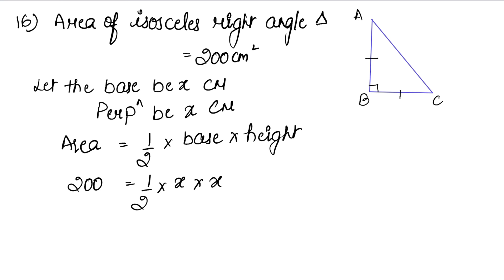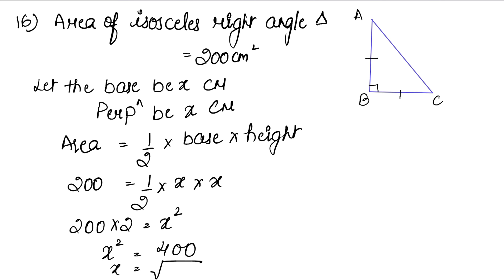So: ½ × x × x = 200, which gives x² = 200 × 2 = 400. Therefore x = √400 = 20 cm. So the base is 20 cm and the perpendicular is also 20 cm.